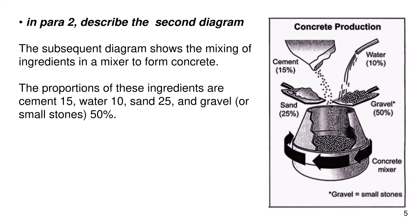In part 2, describe the second diagram. The subsequent diagram shows the mixing of ingredients in a mixer to form concrete. The proportions of these ingredients are: Cement 15%, Water 10%, Sand 25%, and Gravel or Small Stones 50%.